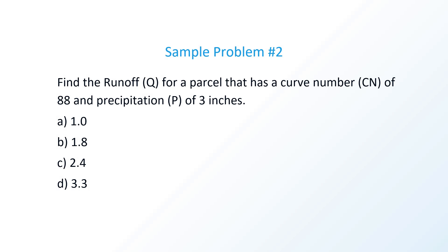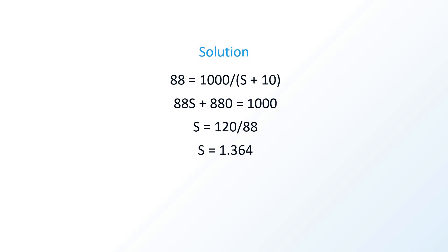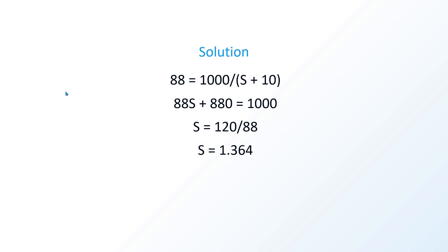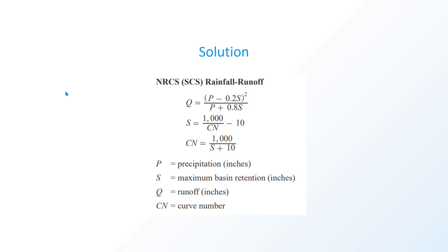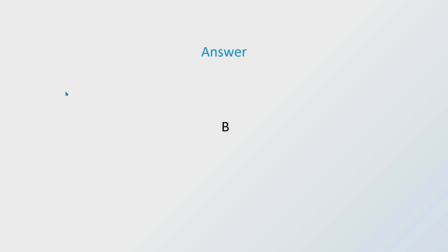Now let's move on to the next problem: find the runoff Q for a parcel that has a curve number CN of 88 and a precipitation P of three inches. We're going to use the SCS rainfall runoff equation — this will be a little more complicated with multiple steps. We have precipitation in inches, the maximum basin retention S, Q runoff in inches, and the CN curve number. First, using CN equals 1000 over S plus 10 with CN = 88, we solve for S, which equals 1.364. Then we plug that into Q equals (P minus 0.2S) squared over (P plus 0.8S). With all given variables, Q equals 1.82, so the answer is B.